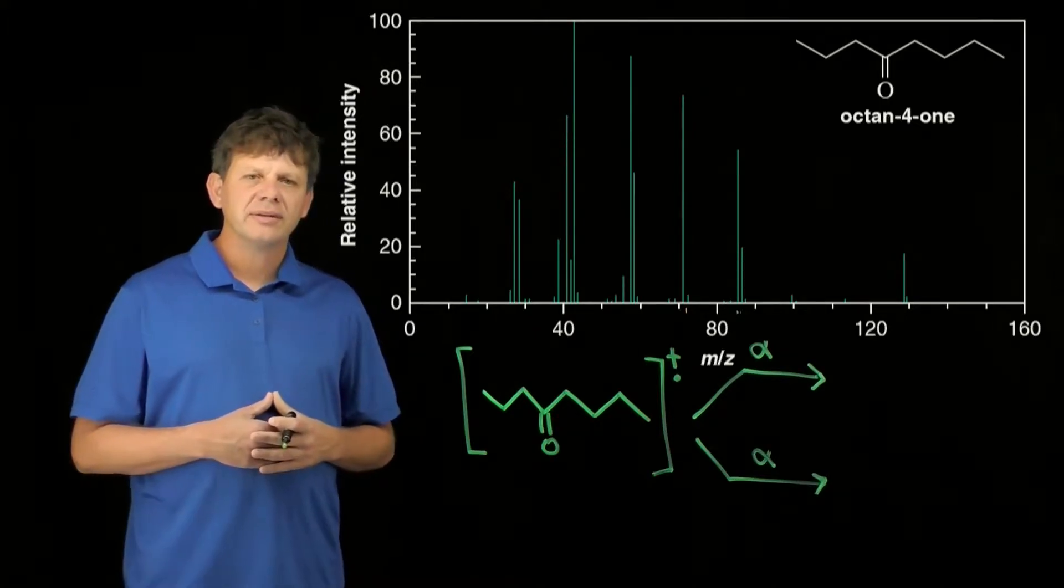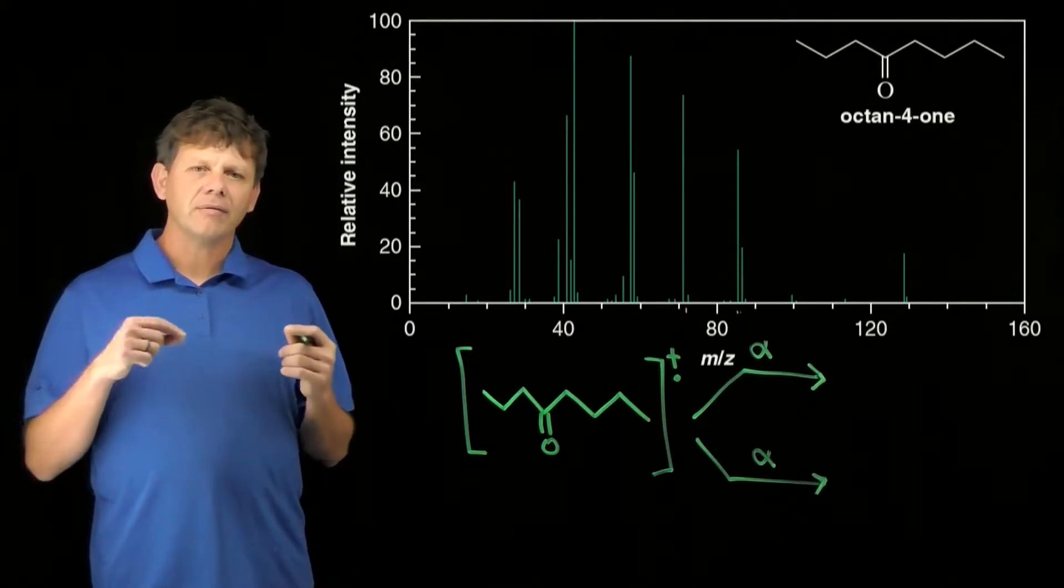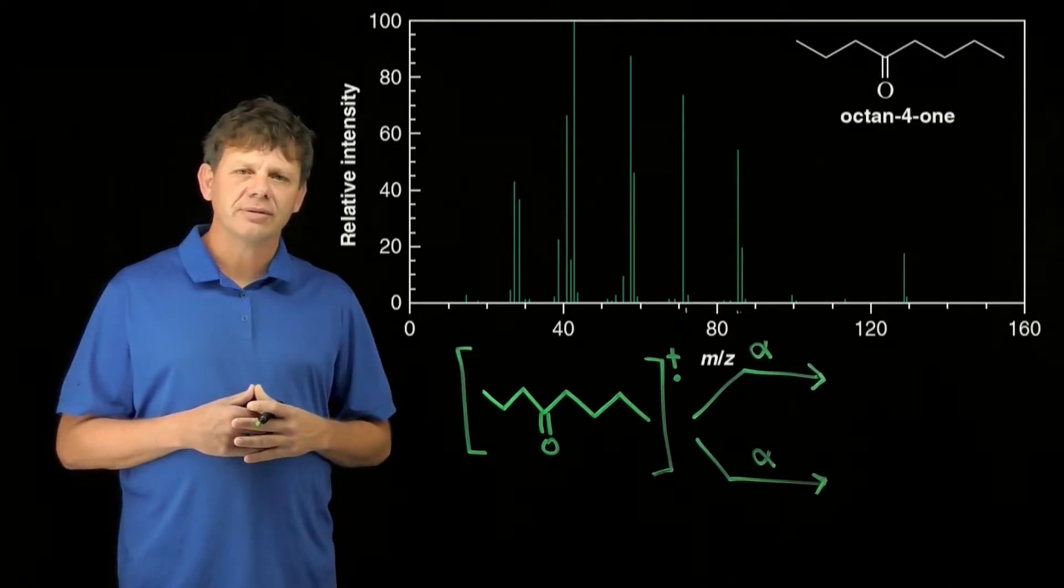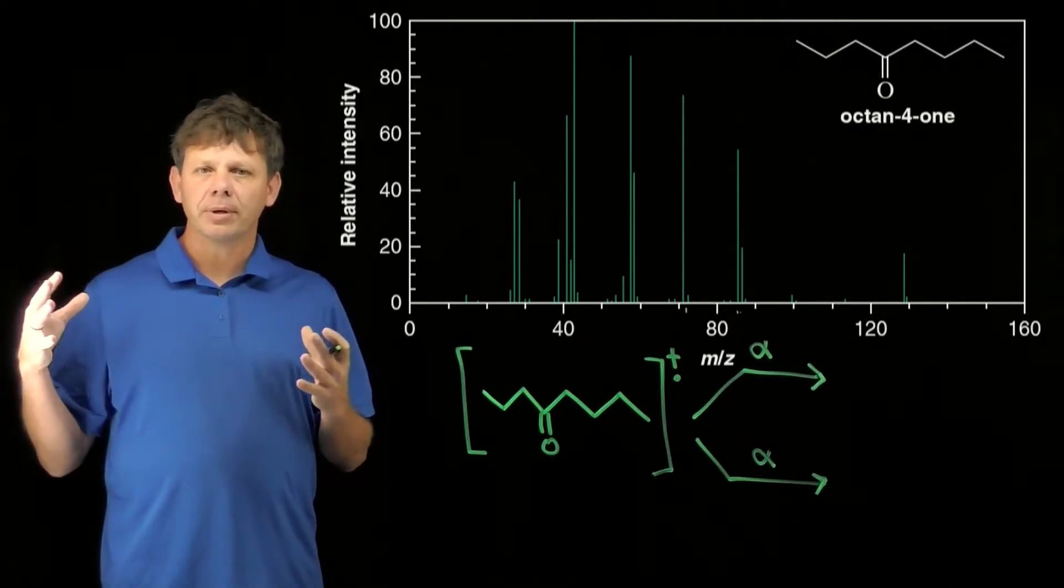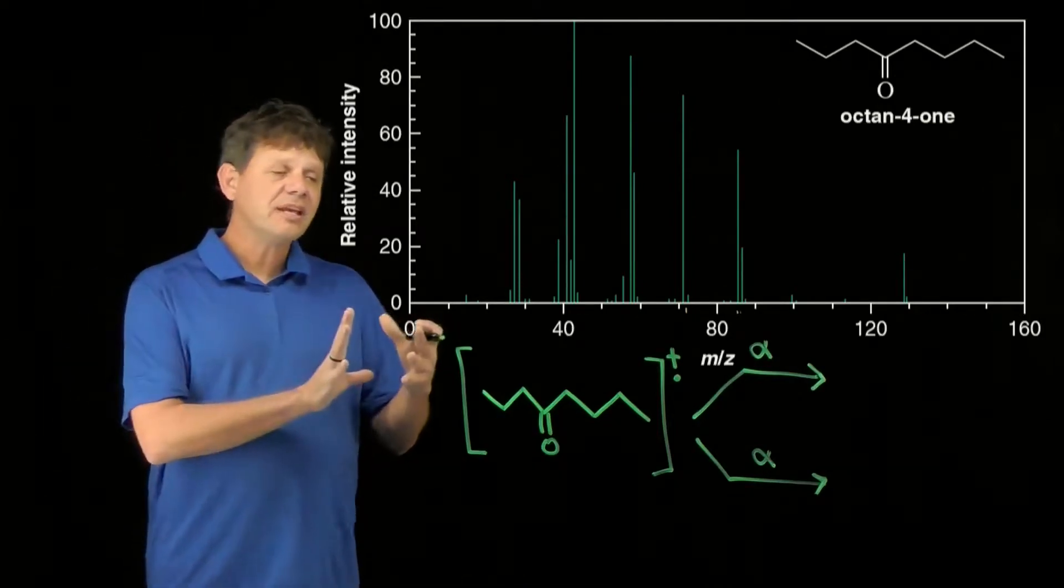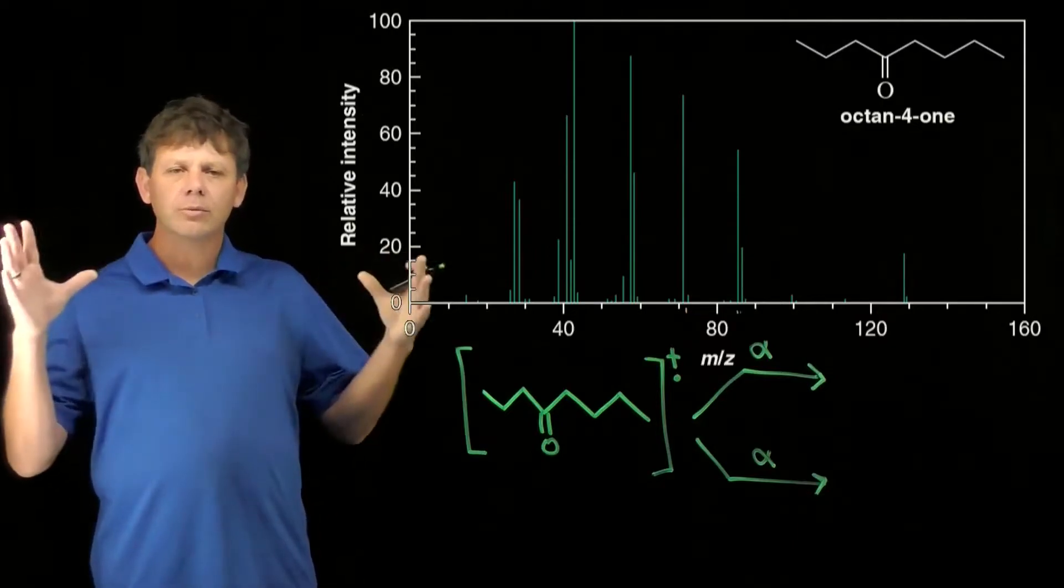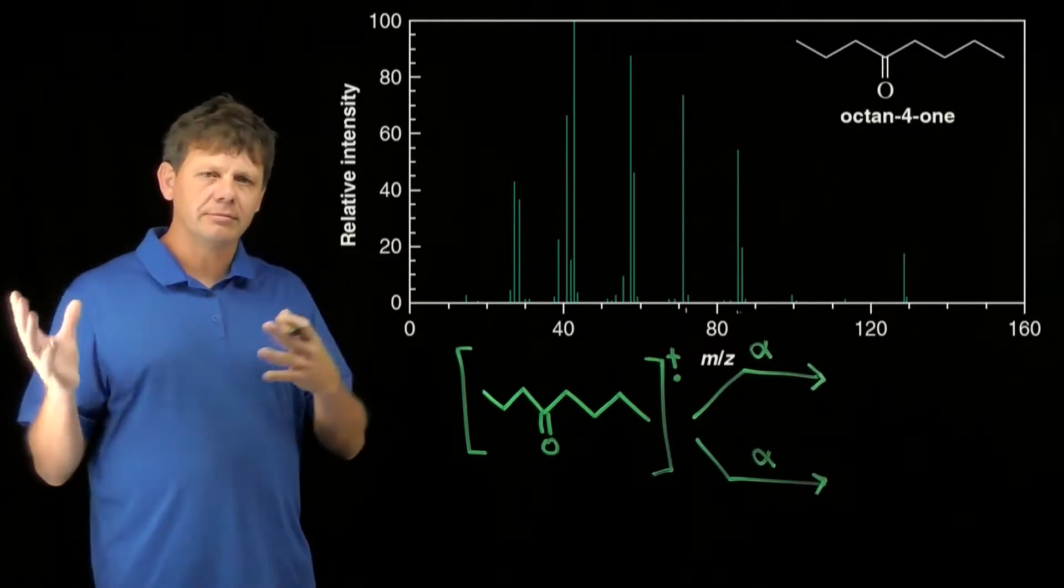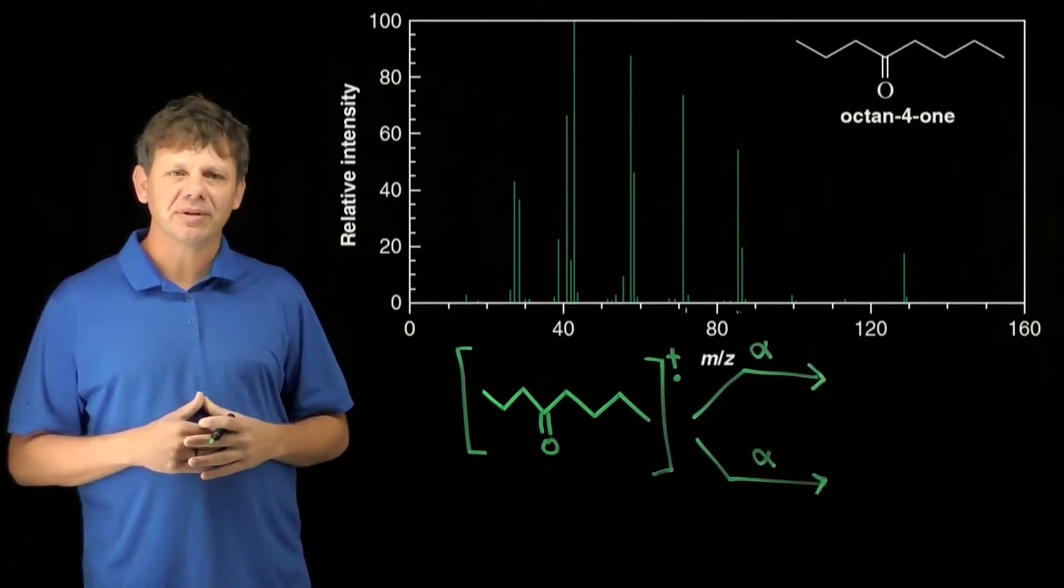In this assessment, you're asked to give the mechanism of two alpha fragmentations, and as a bonus, we don't normally do part B, but I'm going to do part B, a McClafferty rearrangement to see if we can find those fragments in our spectrum. Now I'm going to run out of space on the screen, but hey, that's what happens when you get bonus content.